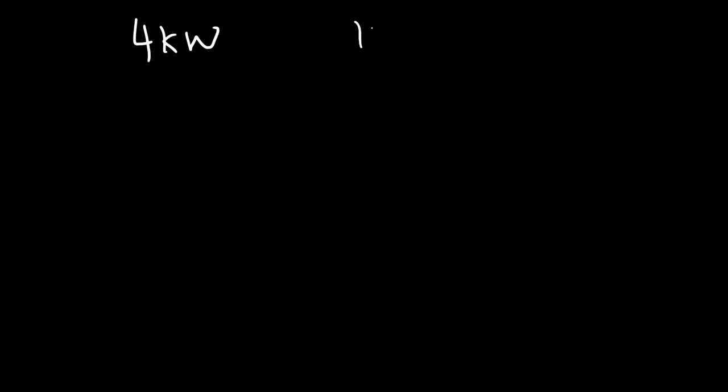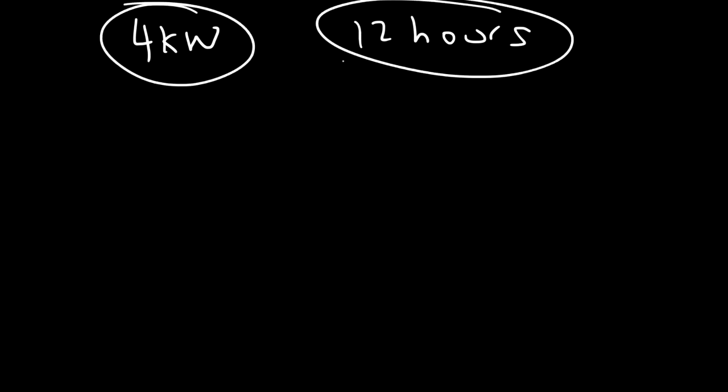Here's another question: if you're running an AC unit that takes 4 kilowatts of power and you wish to run it for 12 hours, how much energy will it use in kilowatt hours? All you have to do is multiply the number of kilowatts by the number of hours, and you get the energy in kilowatt hours — that's going to be 48 kilowatt hours.